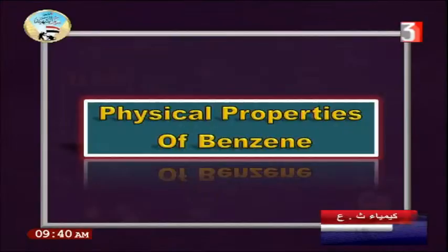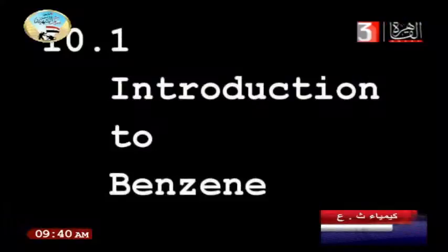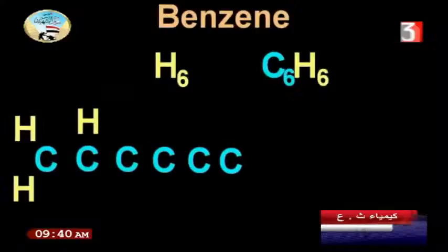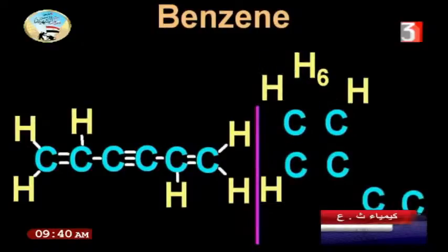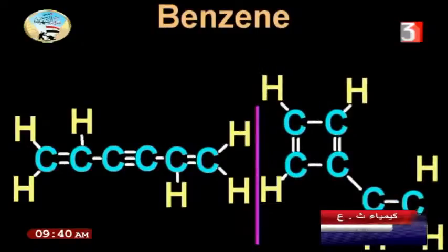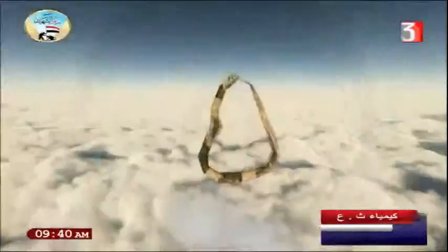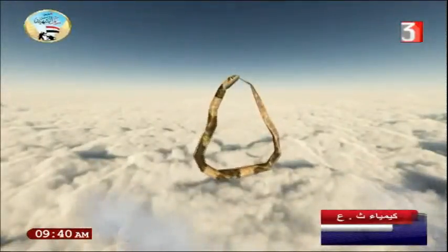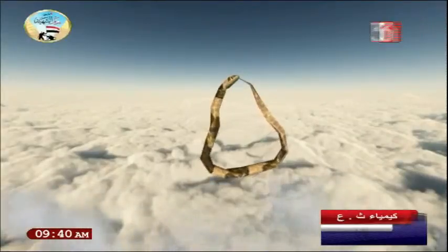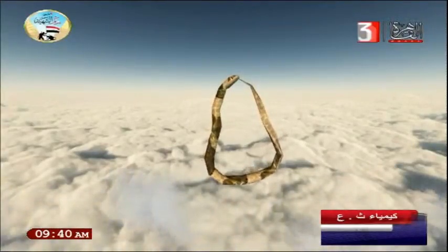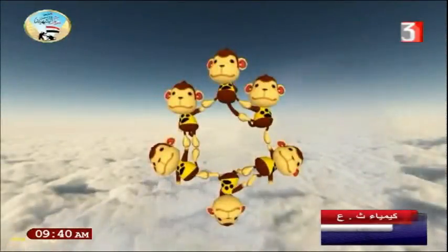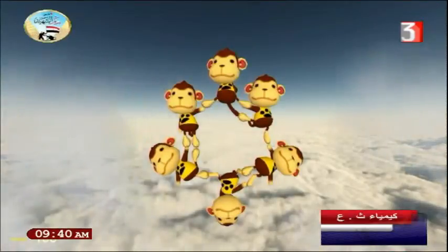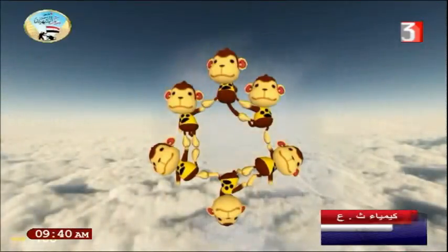Physical properties of benzene: benzene means six carbons and six hydrogens connected together in a cyclic form — a ring. This cycle is not fully stable; according to its bonds, there are about three bonds that can be broken easily and replaced. Some bonds are double, some are single, alternating around the ring.